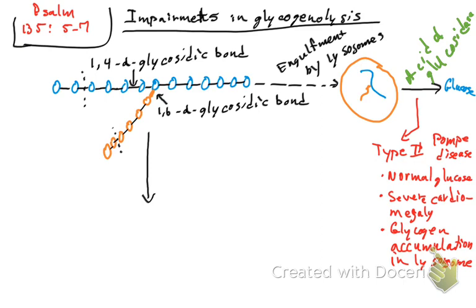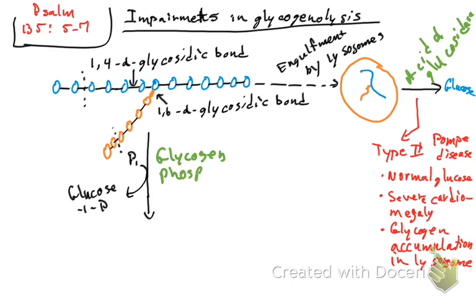Now we go to the other side of the pathway, from top to bottom. Here, phosphate is going to enter and produce glucose-1-phosphate. There is another enzyme here called glycogen phosphorylase. There is a disease that is going to affect this enzyme, and it's called Type 5 McArdle disease.